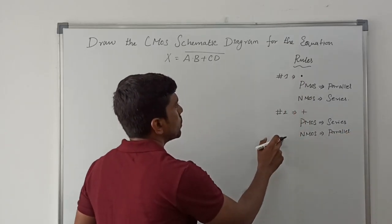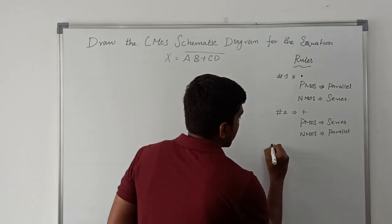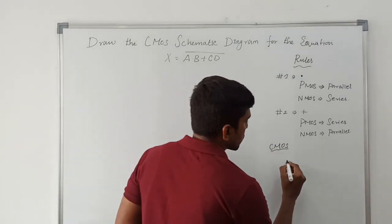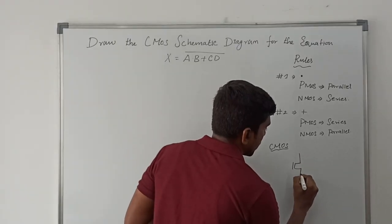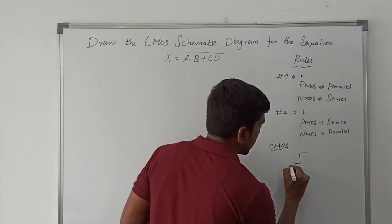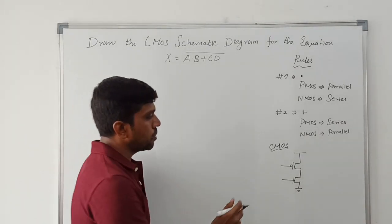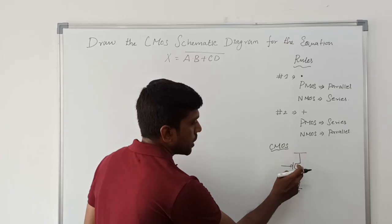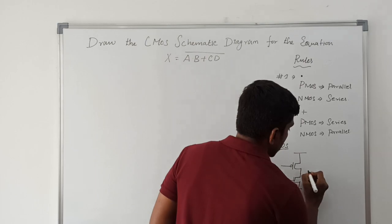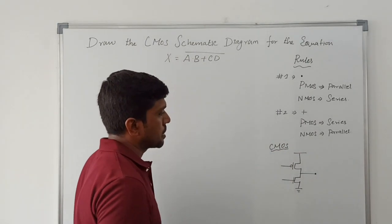These two rules we follow to draw the schematic diagram. The schematic diagram is CMOS, which is a combination of PMOS and NMOS. This schematic diagram involves the CMOS structure, where both PMOS and NMOS transistors are present. The output is taken between the two networks, and this is the basic structure of CMOS.